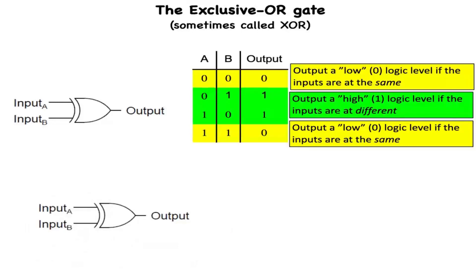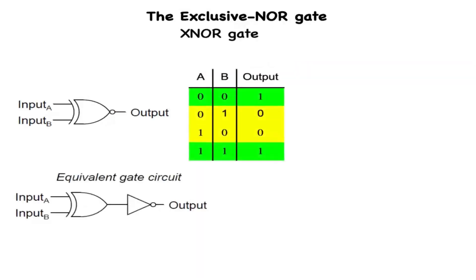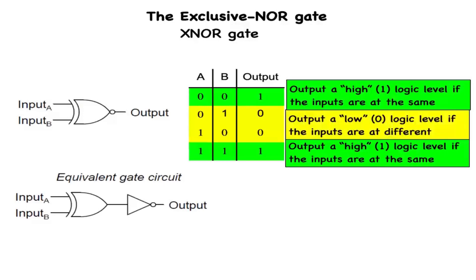Exclusive OR gates are very useful for circuits where two or more binary numbers are to be compared bit for bit, and also for error detection, parity check, and code conversion. Finally, our last gate for analysis is the exclusive NOR gate, otherwise known as the XNOR gate. It is equivalent to an exclusive OR gate with an inverted output. The truth table for this gate is exactly the opposite of the exclusive OR gate. The exclusive NOR gate will output a high (logic level 1) whenever both inputs are at the same logic levels — either 0,0 or 1,1. The output will be low (logic level 0) if the inputs are different. This is the end of this chapter.